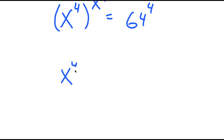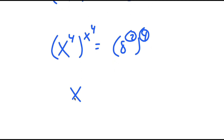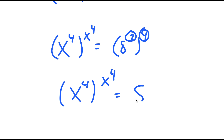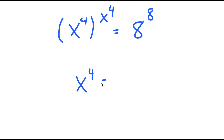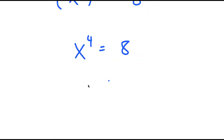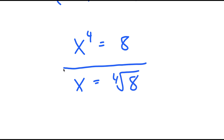Now I'm going to rewrite 64 as 8 squared, so now I have 8 squared to the power of 4, and these two multiply. So I get x to the power of 4 to the power of x to the power of 4 is equal to 8 to the power of 8. This means that x to the power of 4 is equal to 8, and x is equal to the fourth root of 8. So this is my solution to this equation.